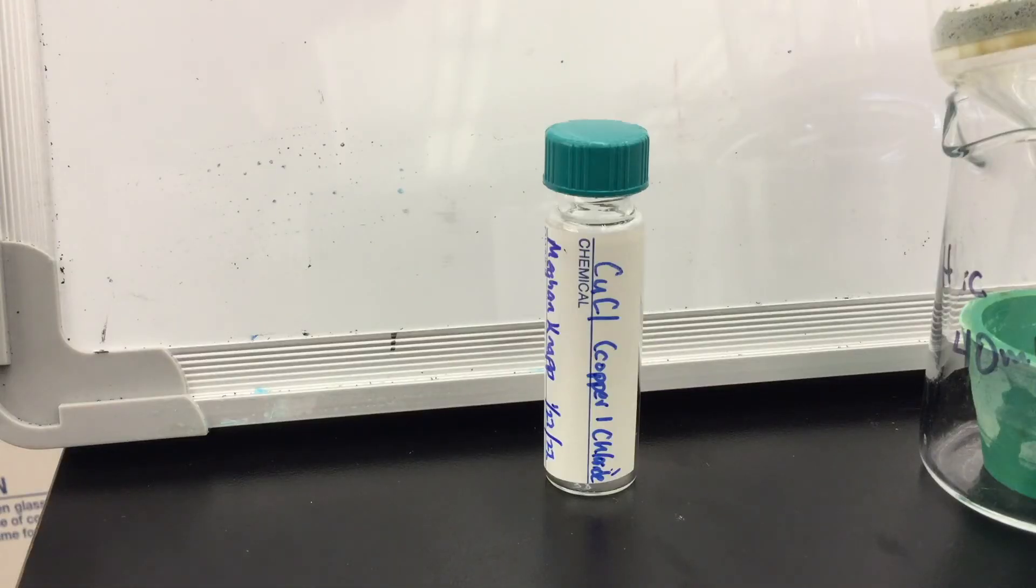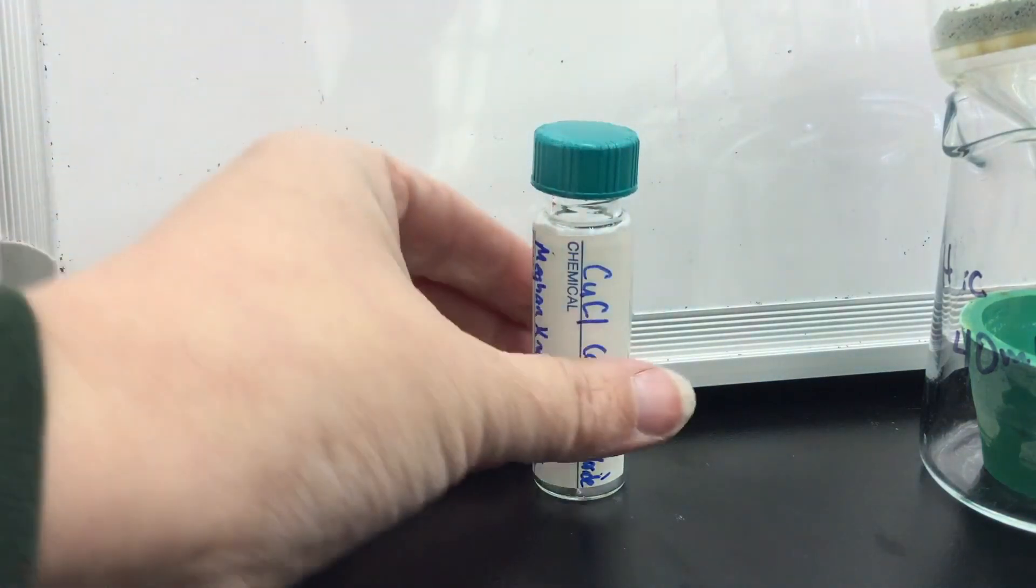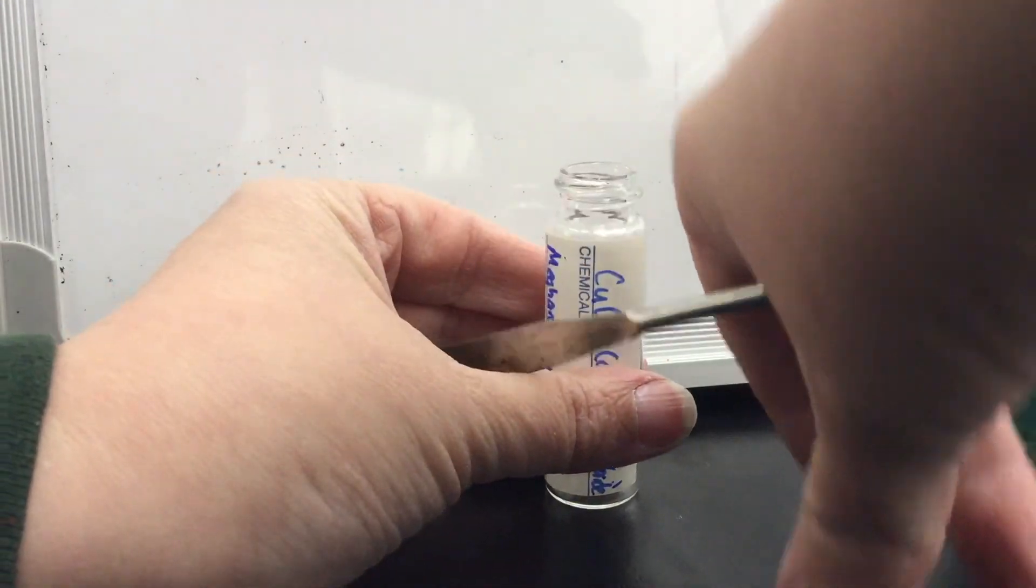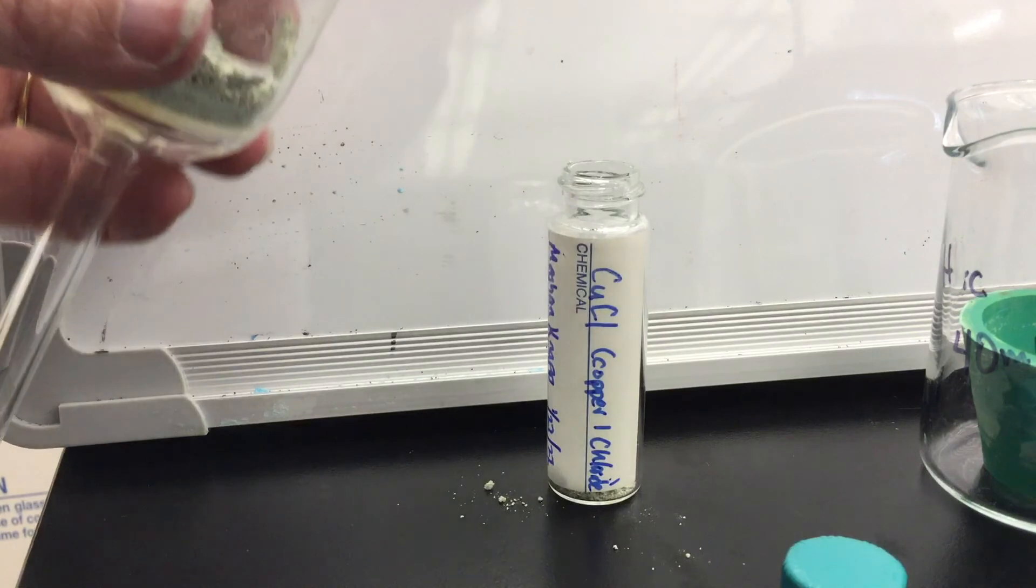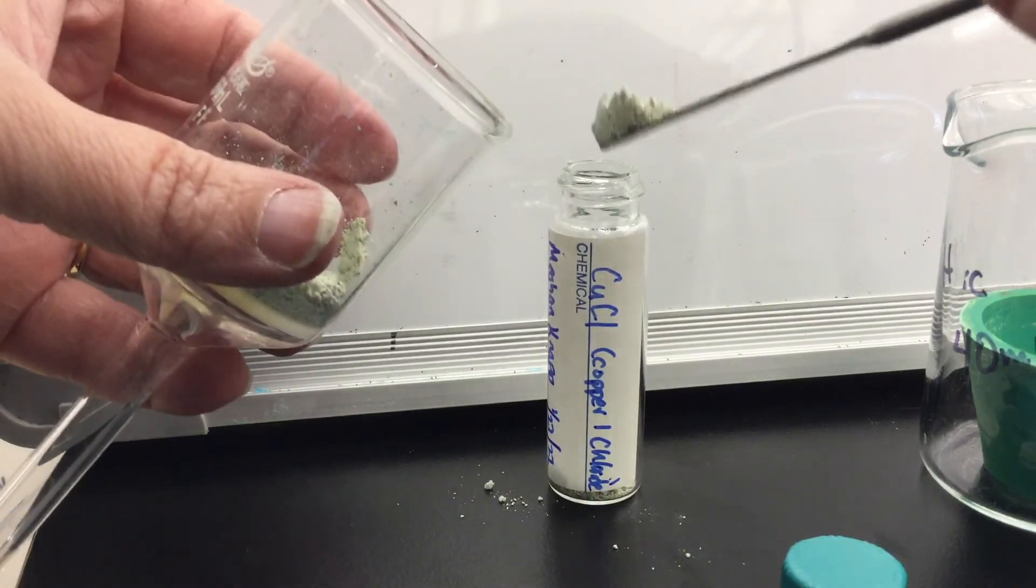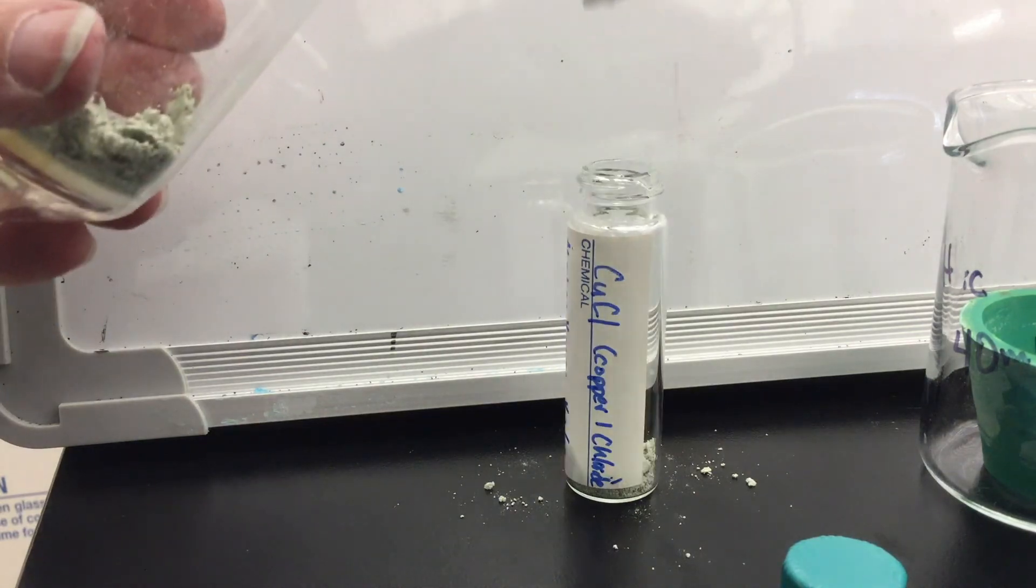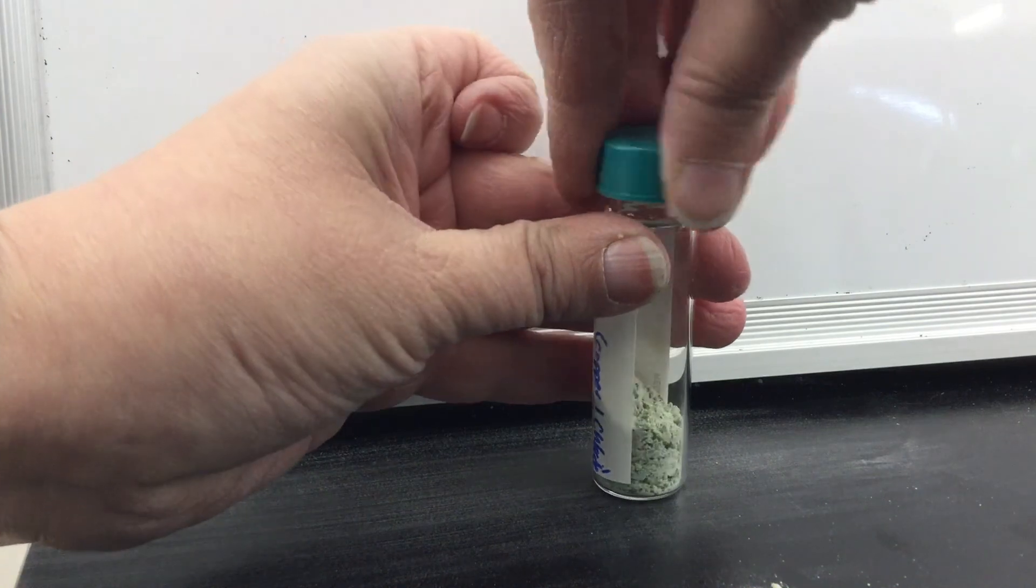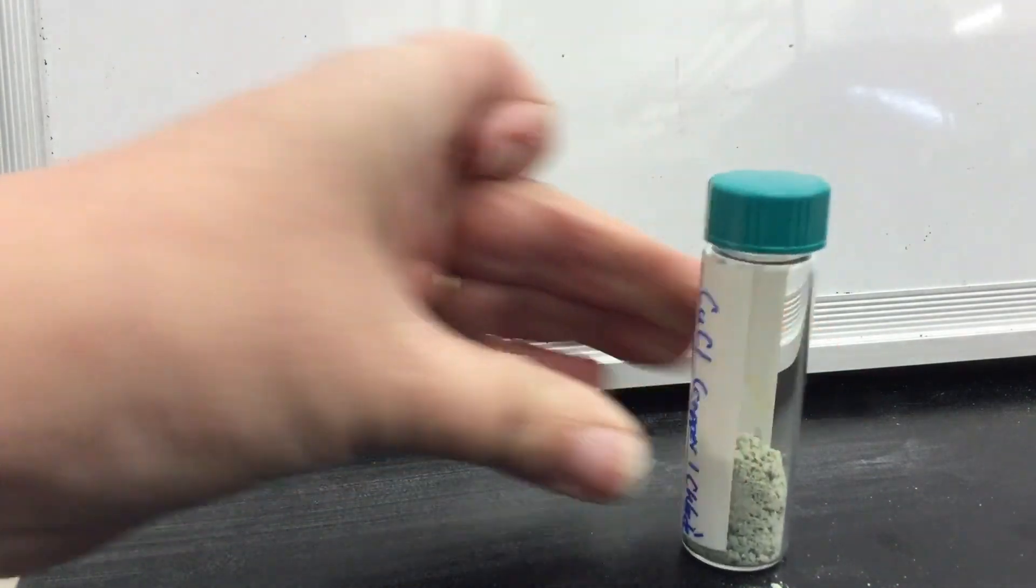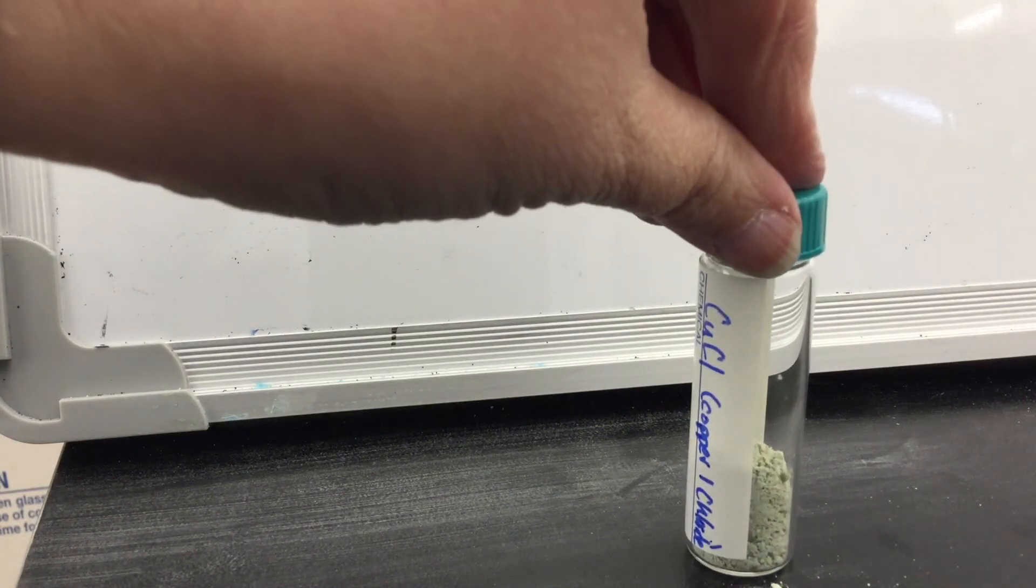Label a vial with the name of the chemical, your name and the date. Weigh the vial with the lid on. If nitrogen is available, make sure that you have nitrogen in the glass tube and then transfer your product to the vial. The product should be fairly dry at this point. Once you have finished transferring, recap the bottle quickly. Reweigh the bottle and determine the percent yield.